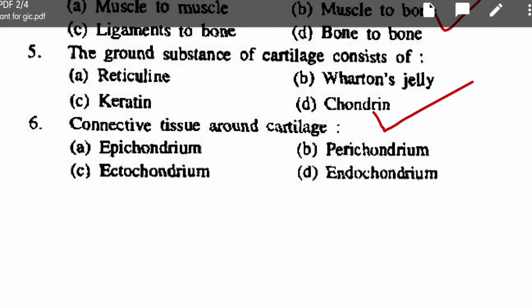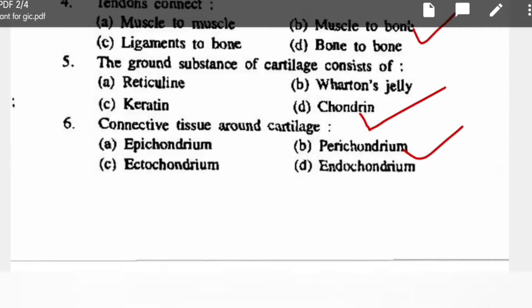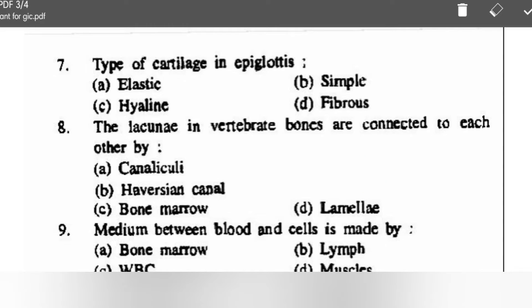Connective tissue around cartilage — options are epicondrium, perichondrium, ectocondrium, endocondrium — correct option is perichondrium. Type of cartilage in epiglottis: elastic, simple, hyaline, or fibrous — correct option is elastic, as elastic fibers are present.